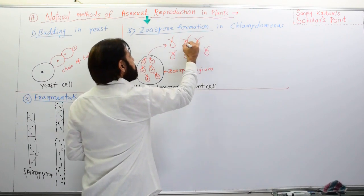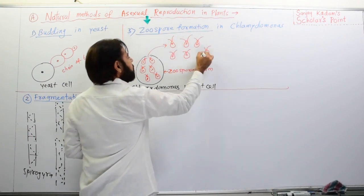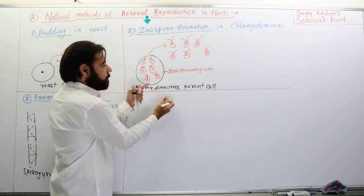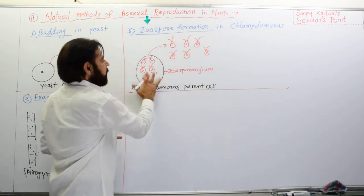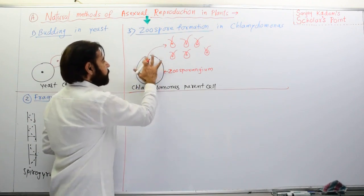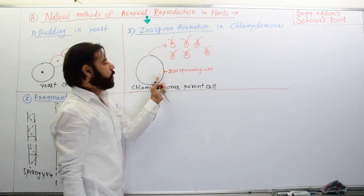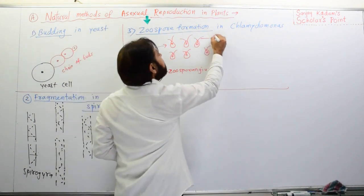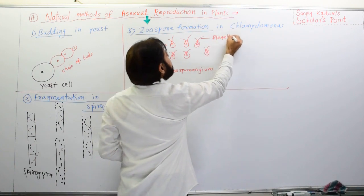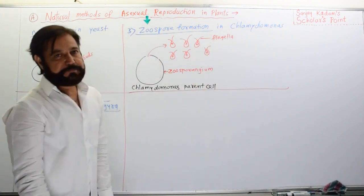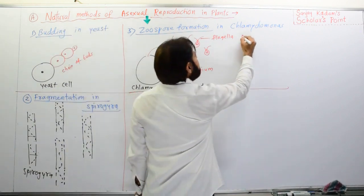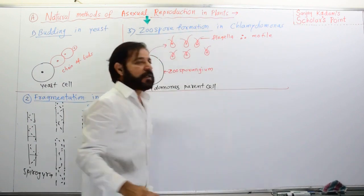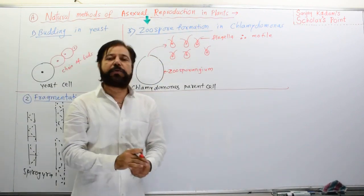When the zoospores are released out from the zoosporangium — meaning the parent cell — they come out and are now free. As they have flagella, they are motile, and in this way they can move from one place to another and grow into new Chlamydomonas.